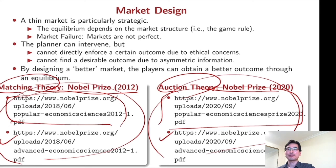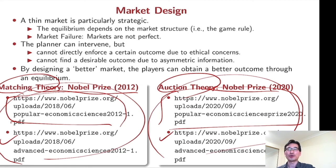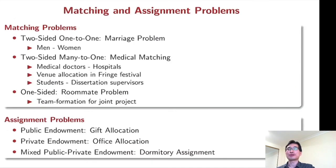Matching theory will be covered in lecture three, and auction theory — which is related to information — will be discussed in lecture four. Matching problems can be classified roughly into two categories.